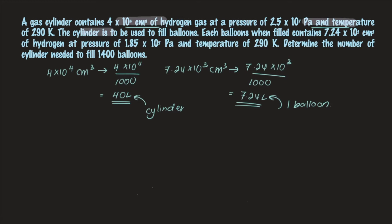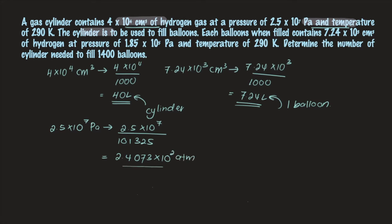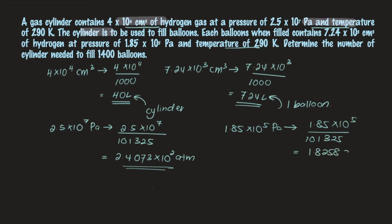Next, we shall convert the pressure from Pascal to atm. The pressure 2.5×10⁷ Pascal divided by 101325 gives 2.4073×10² atm. We do the same for 1.85×10⁵ Pascal divided by 101325, which gives 1.82588 atm.